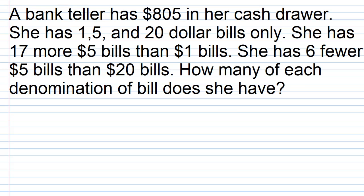I'm going to highlight some of the main points. A bank teller has $805 in her cash drawer. She has one, five, and $20 bills only. She has 17 more $5 bills than $1 bills. She has six fewer $5 bills than $20 bills. And the main question is: how many of each denomination of bill does she have?